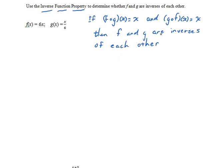The property has a second part that says if you have a pair of inverse functions, then the composition in both directions will take anything back to itself. But the first part is what we need in this case.